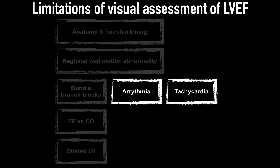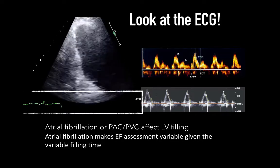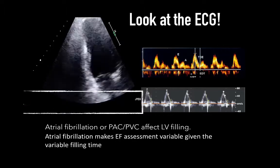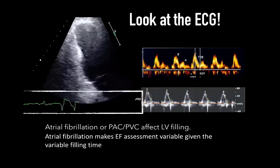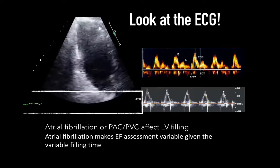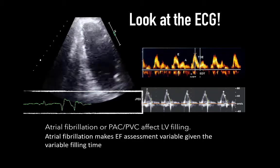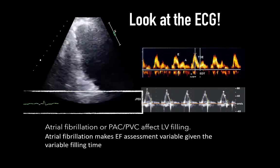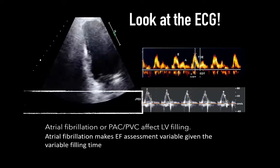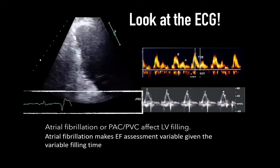Arrhythmia and tachycardia also affect LVEF assessment. With irregular electrical activity such as atrial fibrillation, irregular atrial and ventricular contraction leads to irregular ventricular filling and variable contraction strength due to the Frank-Starling mechanism, showing up as a variable EF from beat to beat. LVEF should generally be assessed based on the contraction representing the most average beat or RR interval. However, the best contraction after a long R-R interval can indicate potential contractile reserve. Looking at the ECG provides the answer.